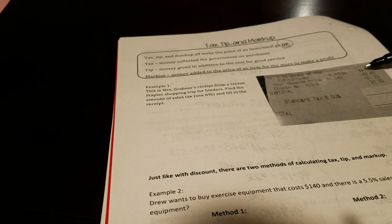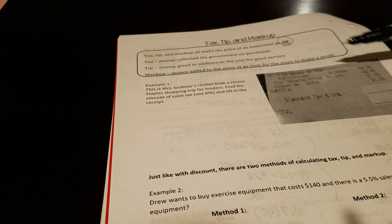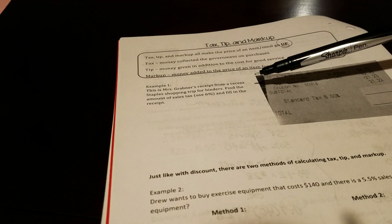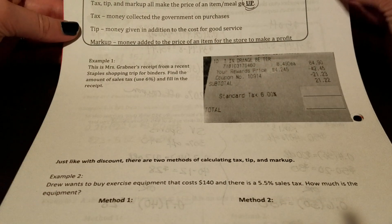In example one here, here's a copy of a receipt. This is actually my receipt from a recent Staples shopping trip where I went for binders. It says find the amount of sales tax. We're going to use 6% because that's ours, and we're going to fill in this receipt then.